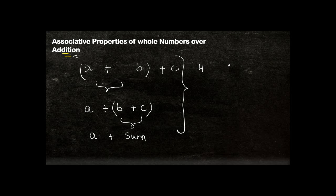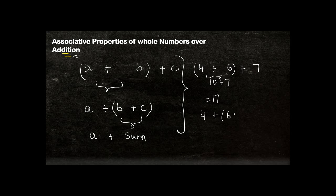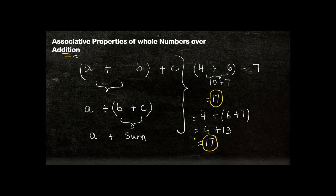Let's take an example with three numbers: 4, 6, and 7. First, I add 4 plus 6 to get 10, then add 7 to get 17. Now instead, I add 6 plus 7 to get 13, then add 4 to that, and the answer is again 17. In both cases the answer is 17.